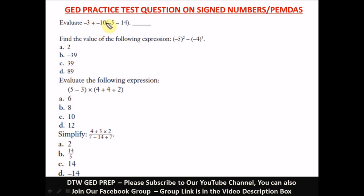The first question says: evaluate this expression — negative 3 plus negative 10 in parenthesis, then negative 5 minus 14. This is very key. I'll leave a link to a video I've done explaining sign rules — how to add, subtract, multiply and divide with signed numbers. It's very important you know those rules.